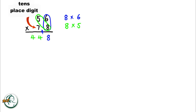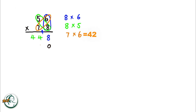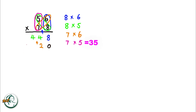Moving on to the tens place digit, we start by writing down a 0. 7 multiplied by 6 equals 42. We write down the 2 and carry over the 4. And 7 multiplied by 5 is 35. Adding the carried over 4 to 35, we get 39.